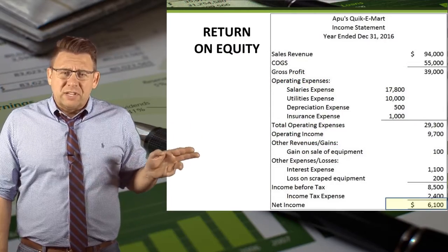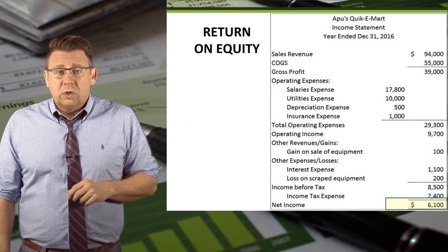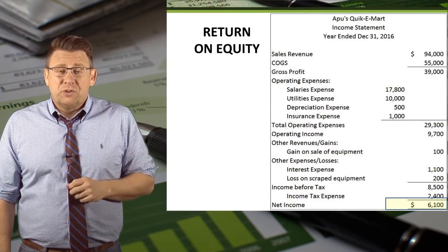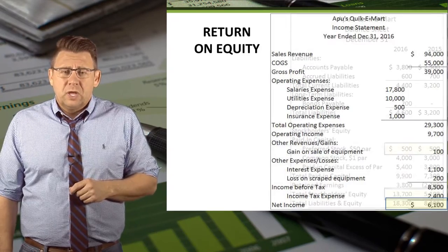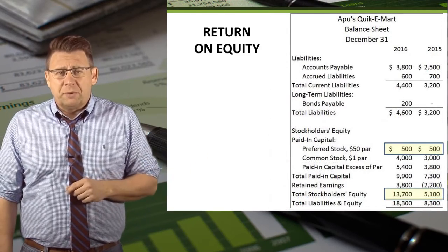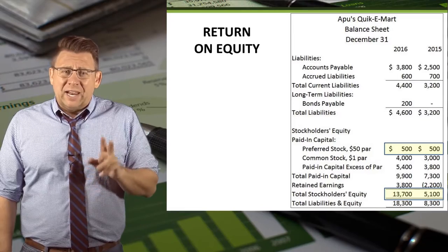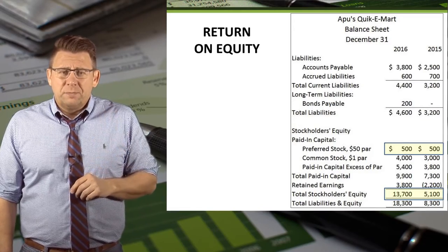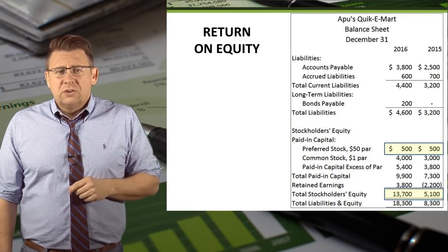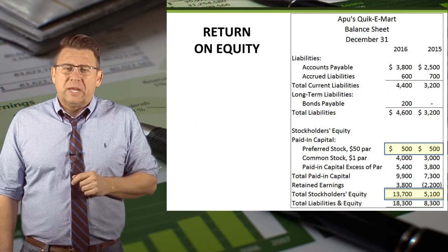Here is an income statement from our sample company. We'll use the highlighted net income to determine the return on equity. And here's a balance sheet from our sample company. We'll use the highlighted total stockholders' equity and preferred stock to determine the average common equity.